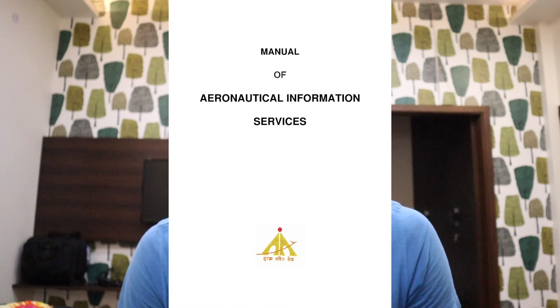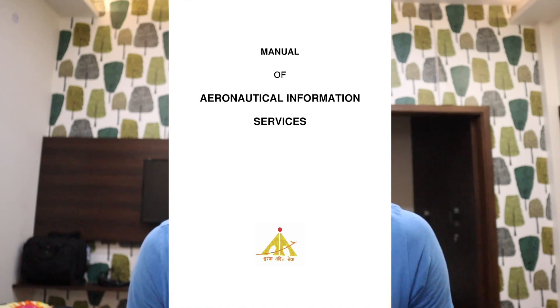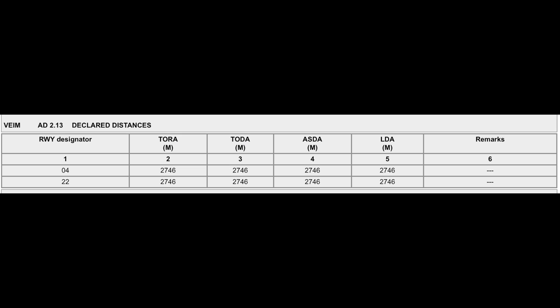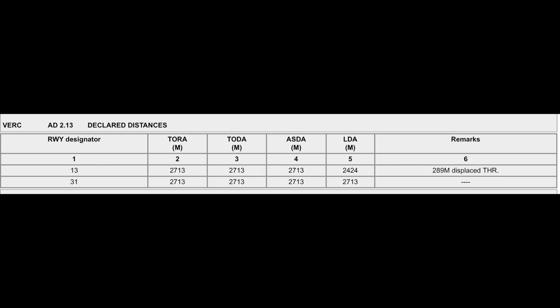Today we're going to be analyzing two airports: one is Imphal and one is Ranchi. These are comparatively shorter runway airports, meaning the runway length available for a landing airplane is not very long compared to airports such as Delhi or Jaipur. The runway lengths available at these airports are all given in the AIP — Aeronautical Information Publication — issued by the Airport Authority of India, which has all the information about airports in India.